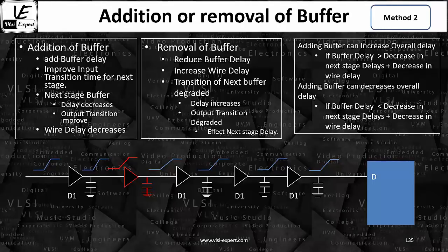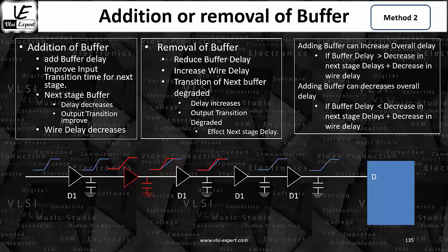The transition time is going to change. The input transition is the same, but the output transition is different. So the output transition of this buffer is different, which means this output is going to be the input of the next buffer. That means the input transition of the next buffer is going to change, because the output transition has a dependency on the load and input transition.